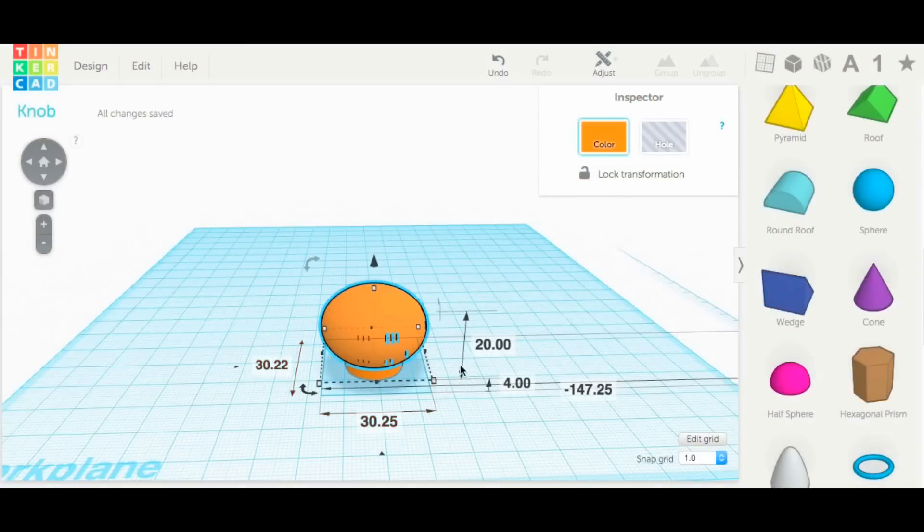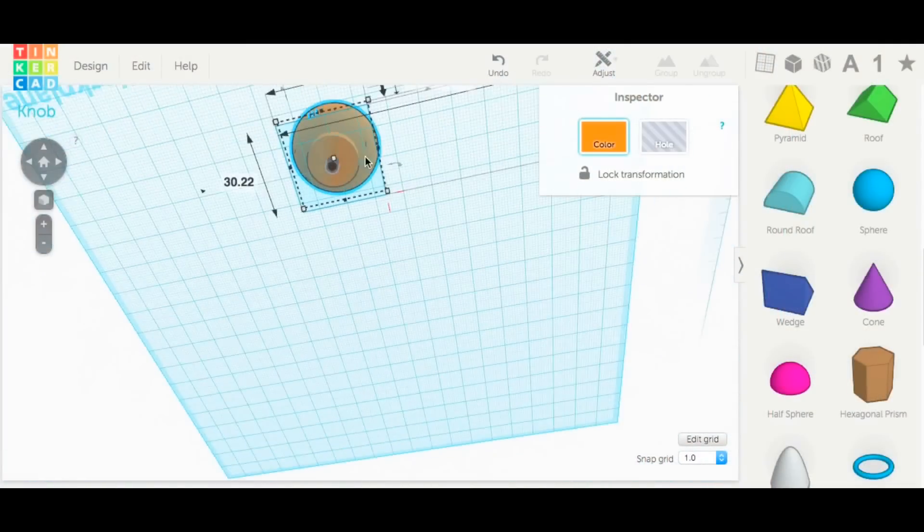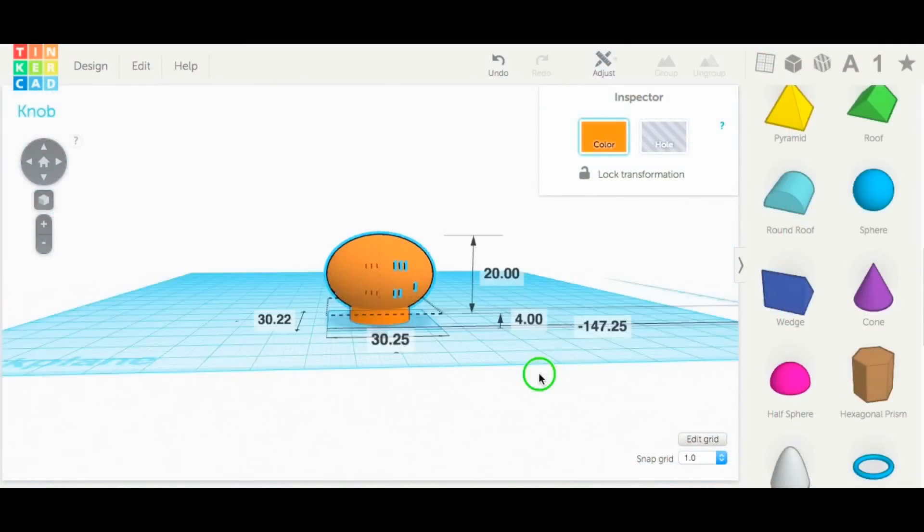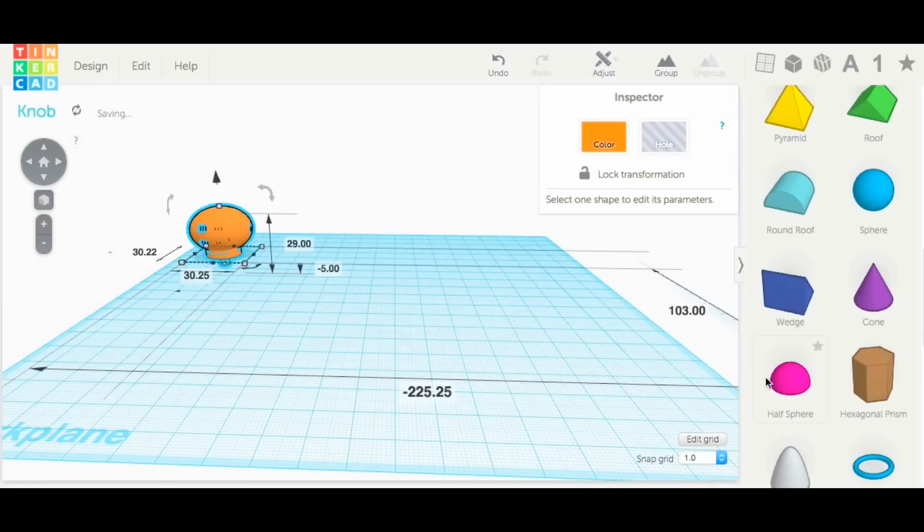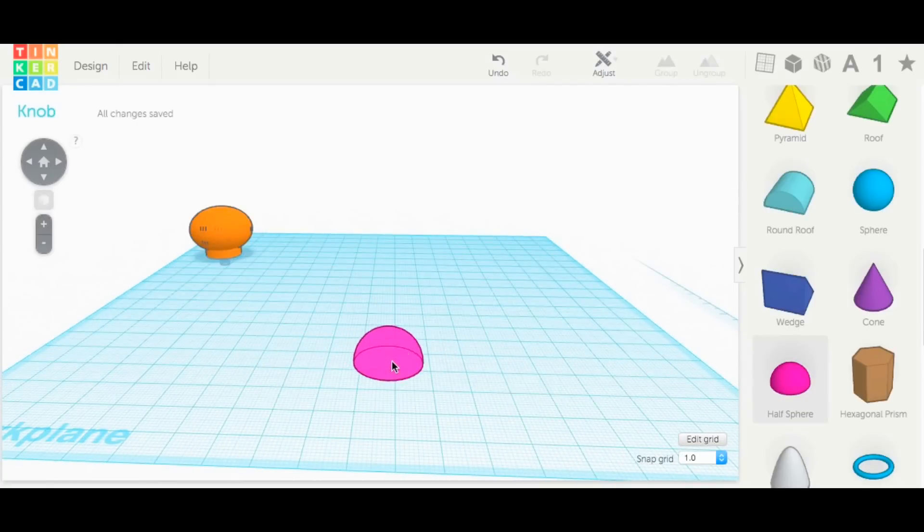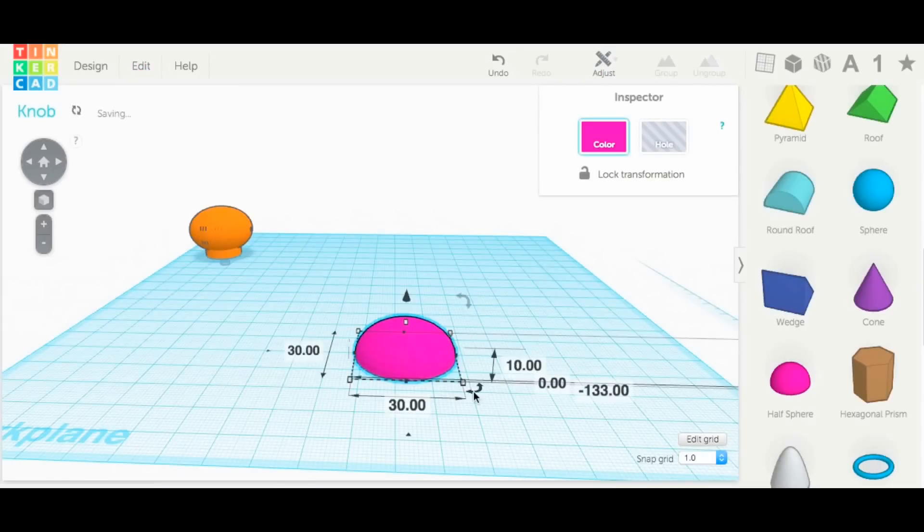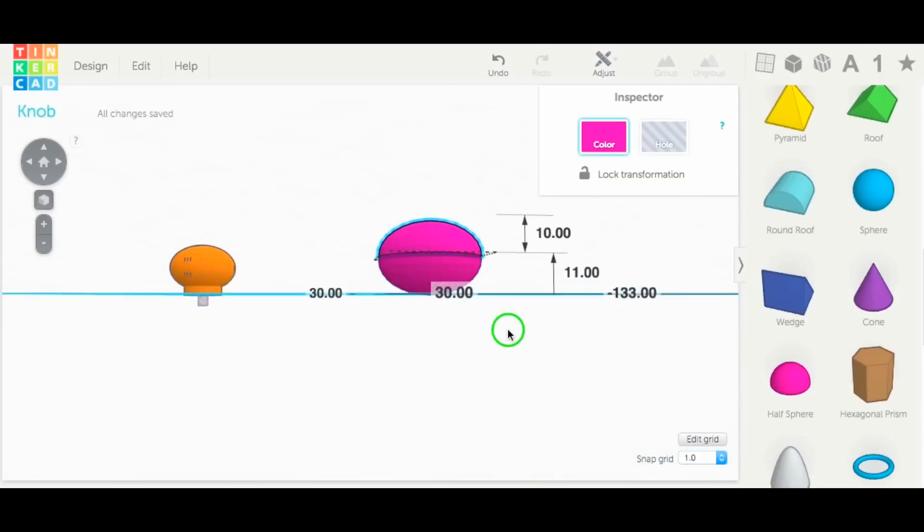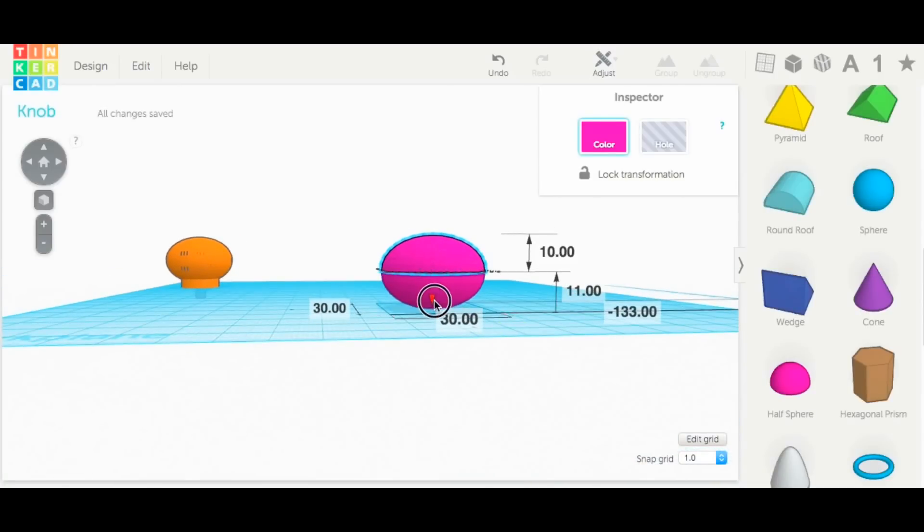So now let me show you the knob design that I made in Tinkercad. Here's the finished design with a hole in the bottom for the screw. But this thing was so easy to make, let me move it out of the way here, and I'll just make another one. I took a half sphere and I made it the dimensions I wanted, 30 by 30. And then I duplicated it, and then used the mirror tool to make a second one, and then brought one on top of the other. And I just eyeballed this so they're pretty close to perfectly touching each other, and then I grouped them together as one unit.